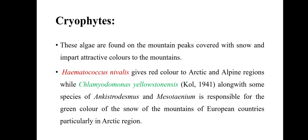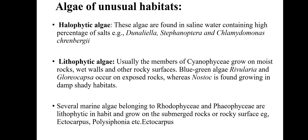Next, cryophytes — these algae are found on mountain peaks covered with snow, that means in extremely cold conditions. Remember these examples as they have already been asked in SSB Lectureship examinations. Haematococcus nivalis imparts red color in arctic and alpine regions, while Chlamydomonas yellowstonensis imparts green color to the snow in mountains of European countries, particularly in arctic regions. Remember: Haematococcus nivalis — red color; Chlamydomonas yellowstonensis — green color.